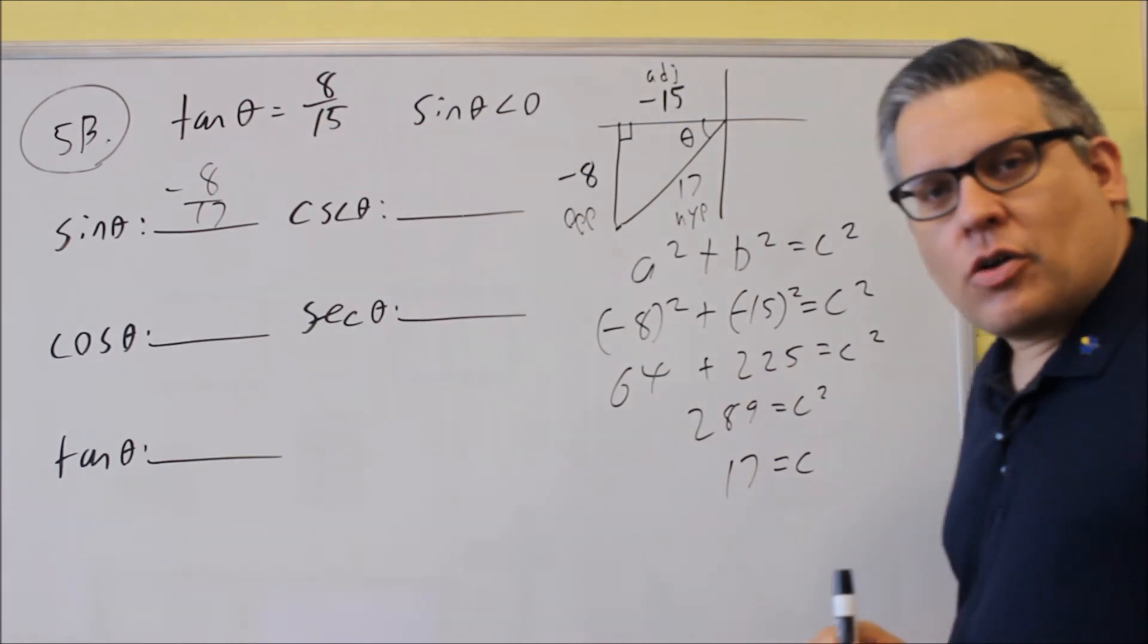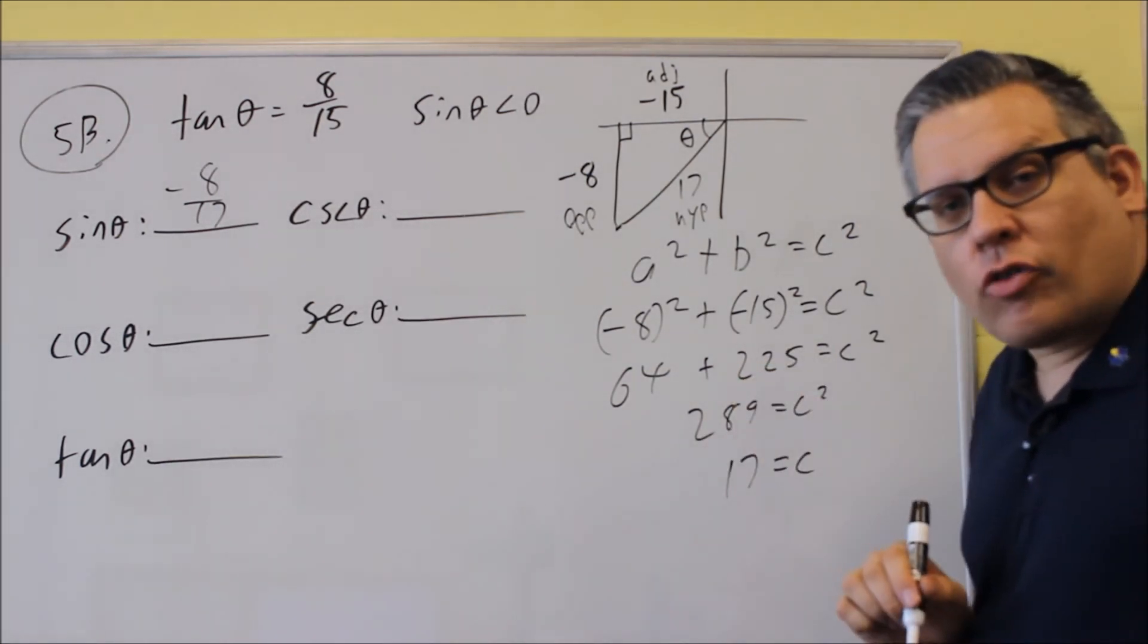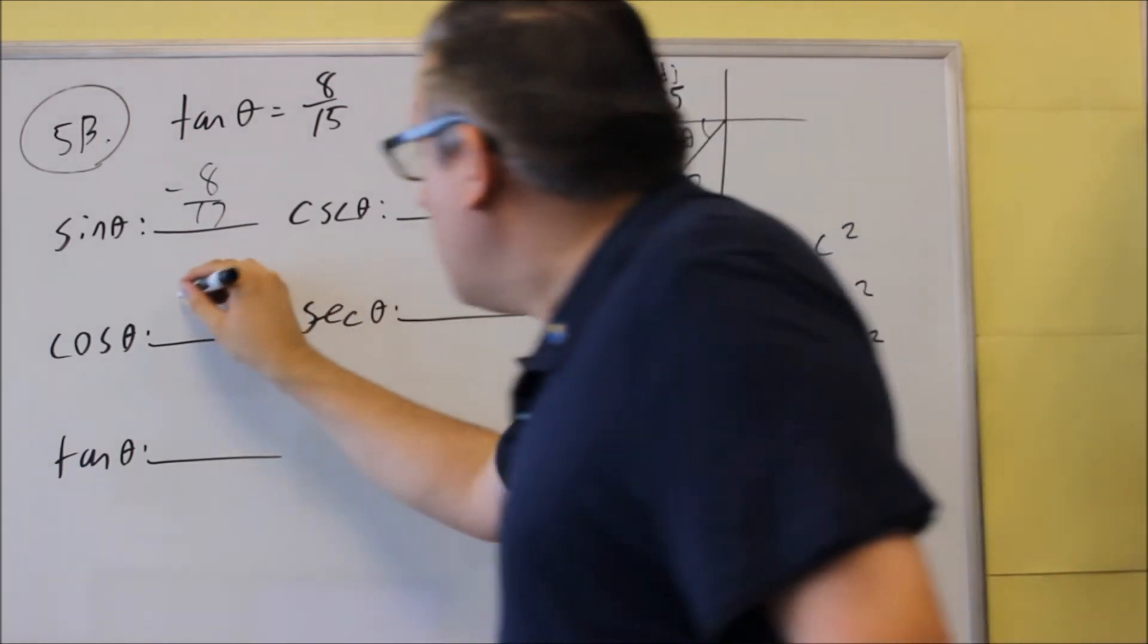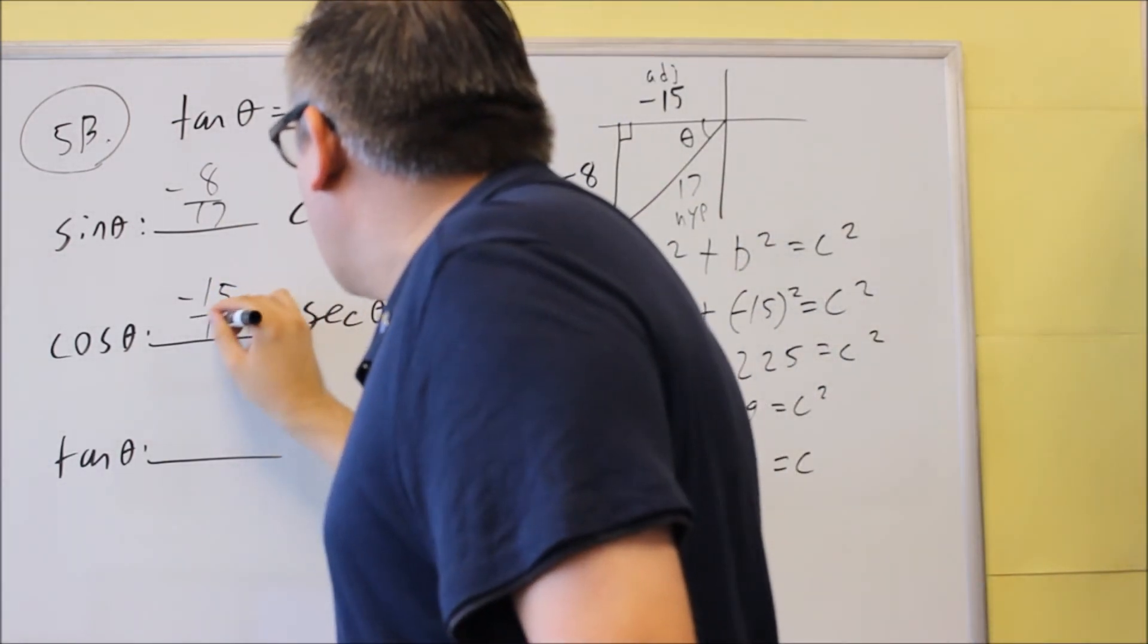For cosine, cosine is equal to the adjacent over hypotenuse. Adjacent is negative 15 over hypotenuse. Negative 15 over 17.